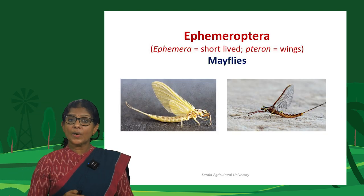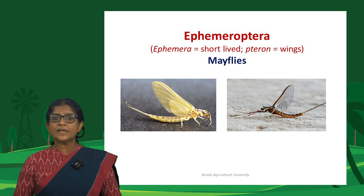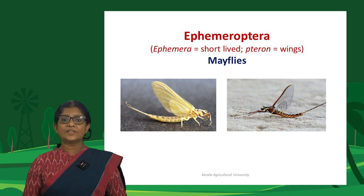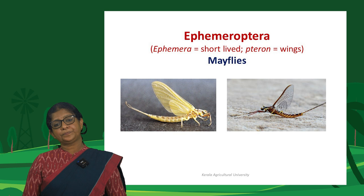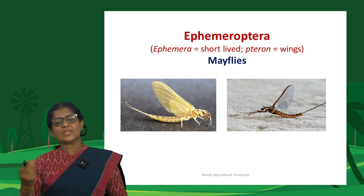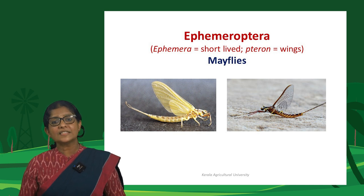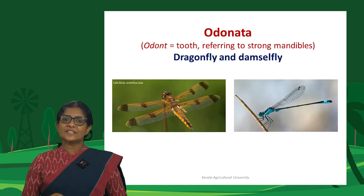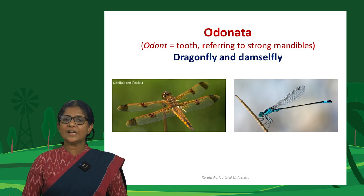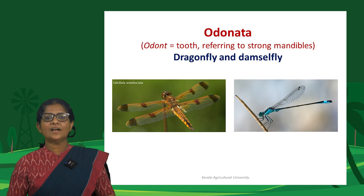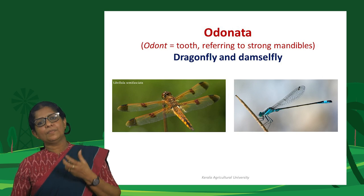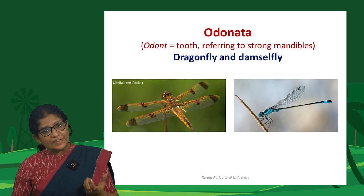The two Palaeopteran orders are Ephemeroptera and Odonata. Ephemeroptera are mayflies — 'ephemeral' refers to their short adult life, and they are called mayflies because adults emerge in large numbers during the month of May. Odonata are dragonflies and damselflies; the word Odonata is derived from 'odont' (tooth), referring to the strong mandibles these insects possess both as naiads and adults. They are predaceous.